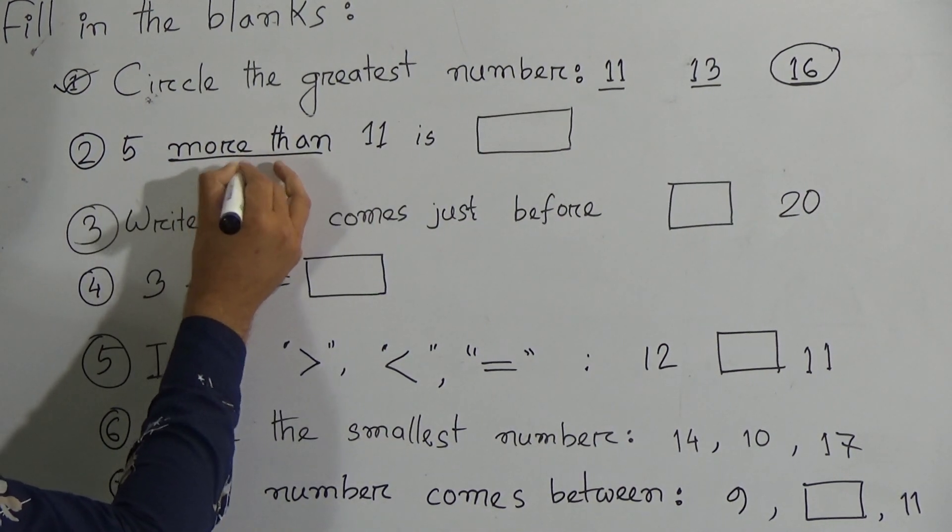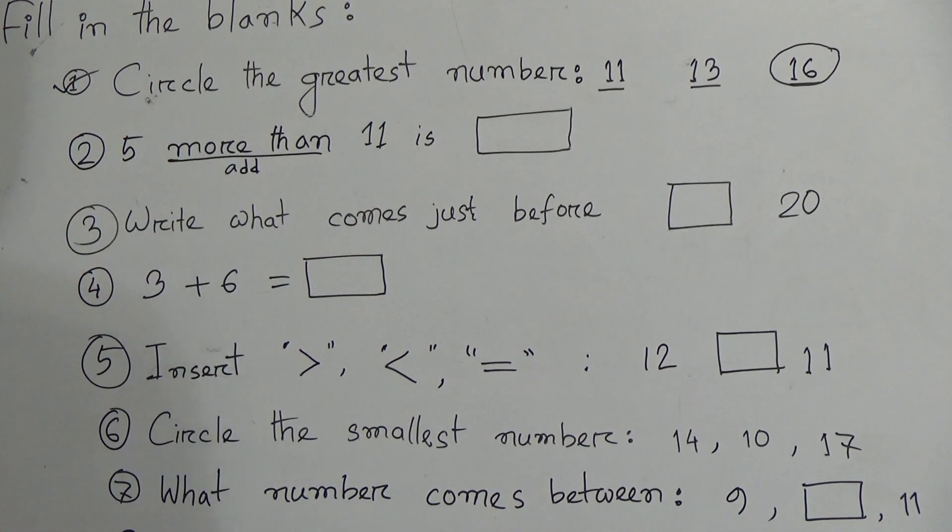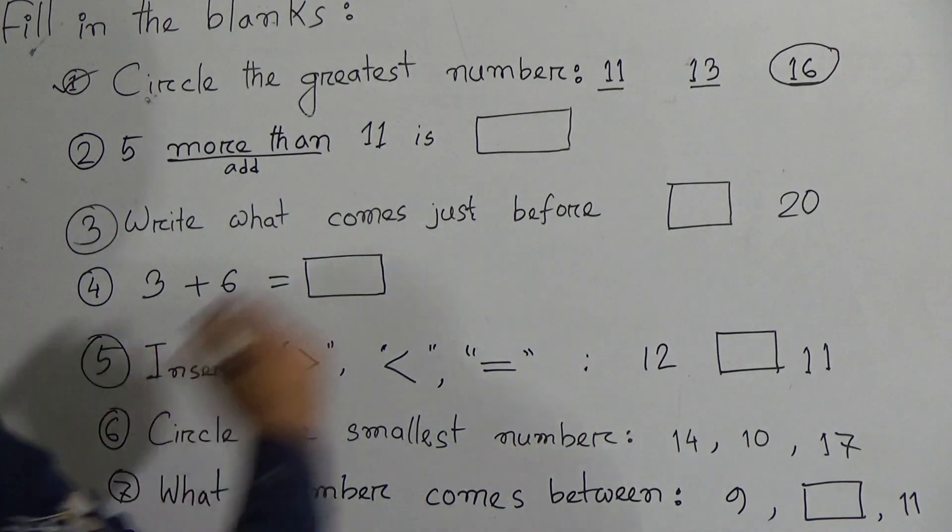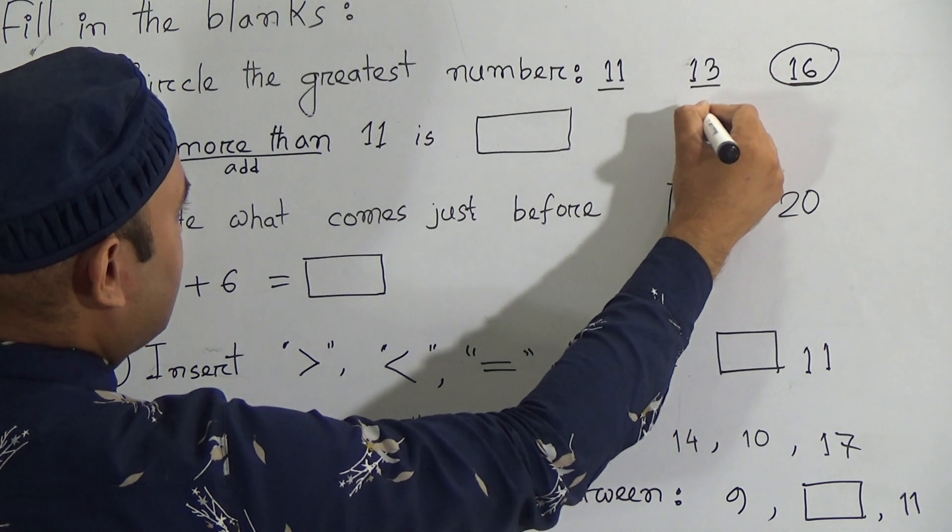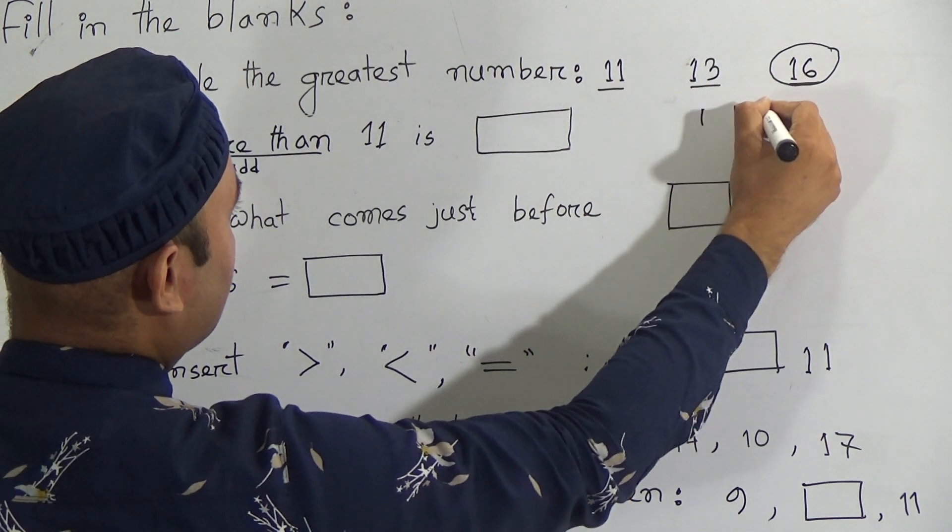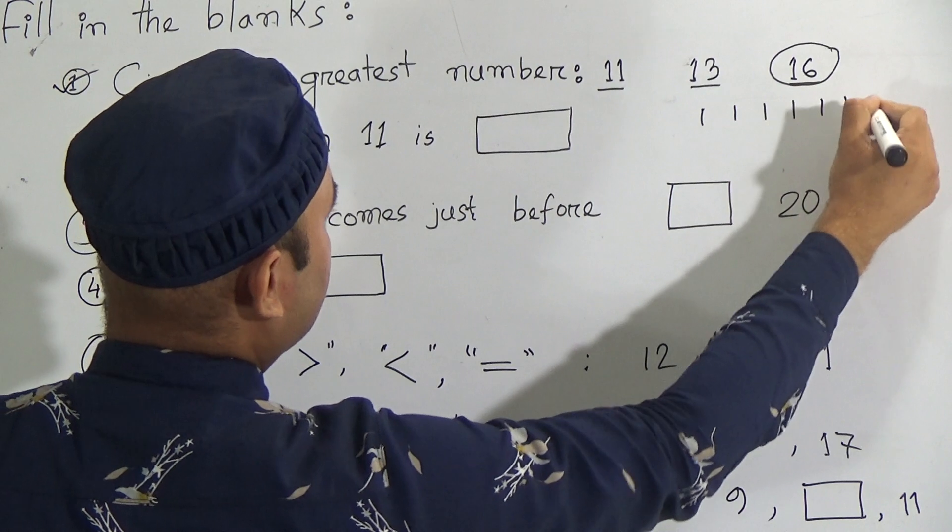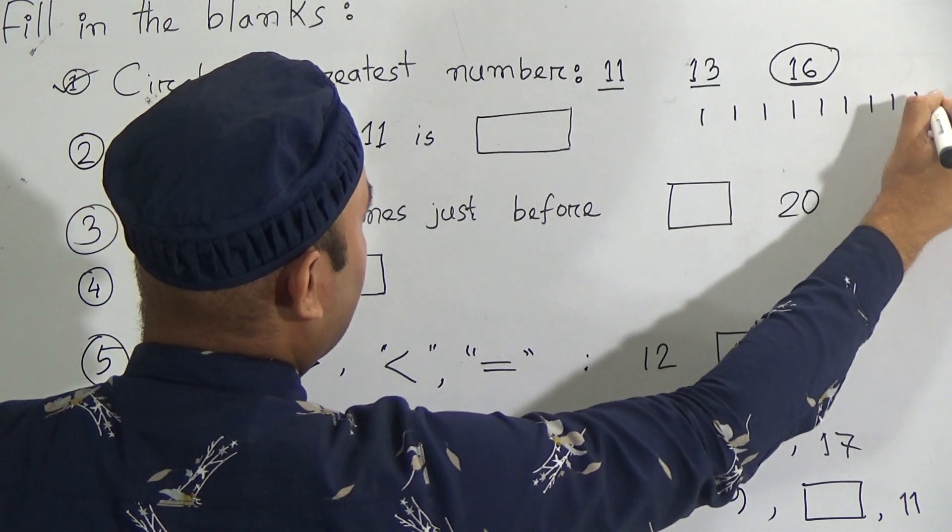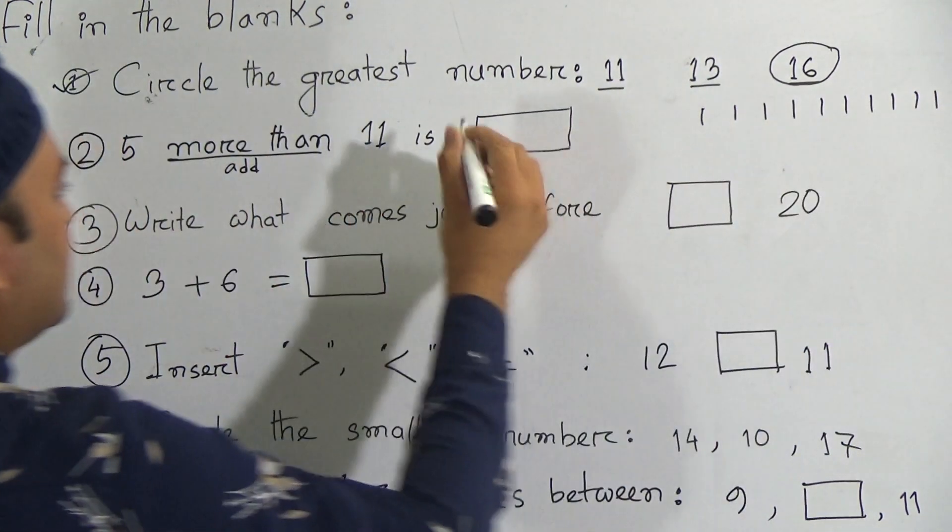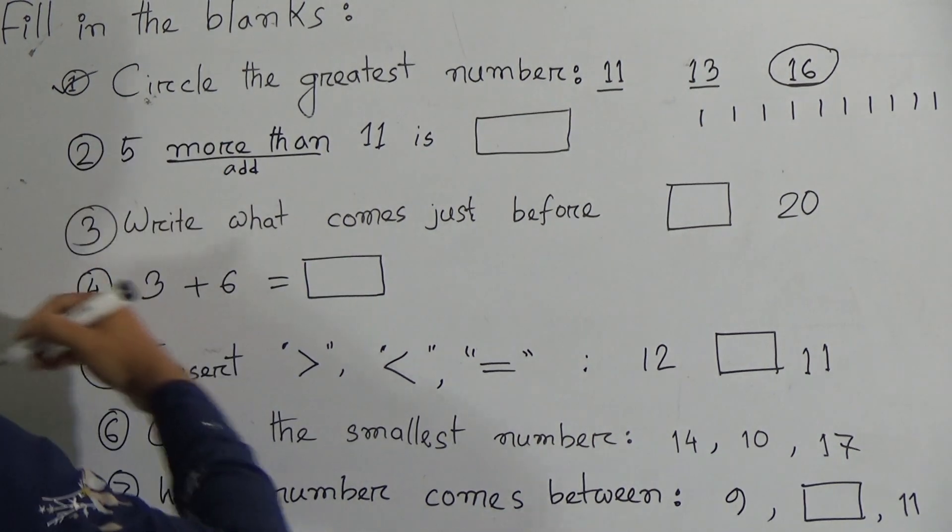More than means you have to add. Now let us consider there are 11 sticks: one, two, three, four, five, six, seven, eight, nine, ten, eleven. There are eleven sticks.